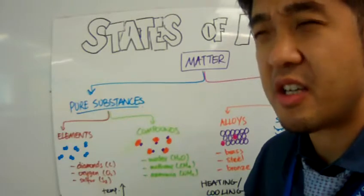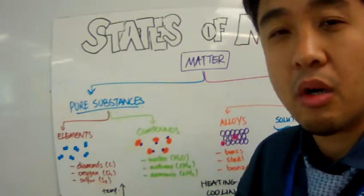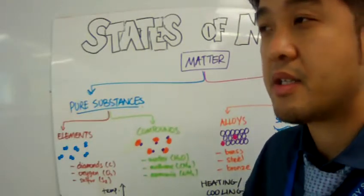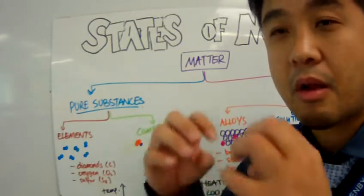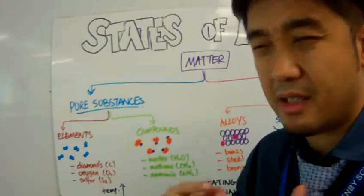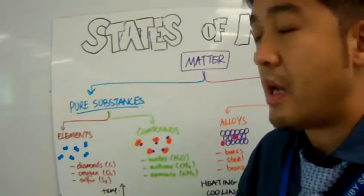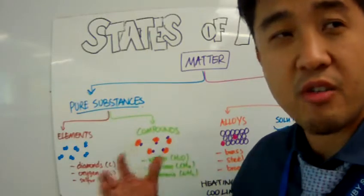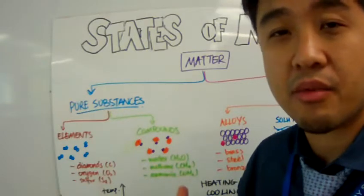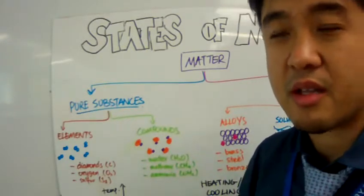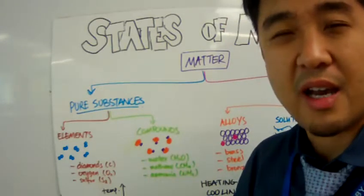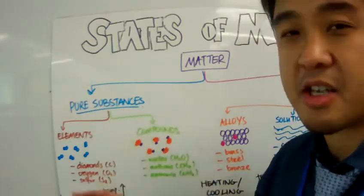But elements don't necessarily have to be a single particle or a diatomic particle. It can also be like sulfur - sulfur has eight sulfur atoms combined together to form a sulfur element. But elements can also get really big like diamonds. Diamonds or graphite are basically lots of carbon joined together to form this big giant structure or lattice structure. These are examples of elements.